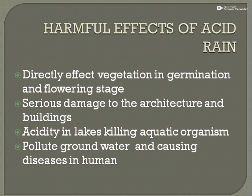Next, the harmful effects of acid rain. First, it directly affects vegetation in the germination and flowering stage. As acid rain falls on the earth, it destroys plantation as well as the flowering stage in plants. Second, it seriously damages architecture and buildings. When acid rain falls on the earth, it destroys various kinds of buildings — for example, the Taj Mahal.